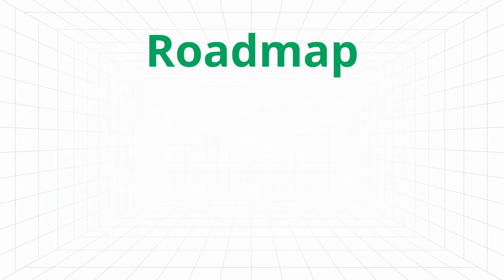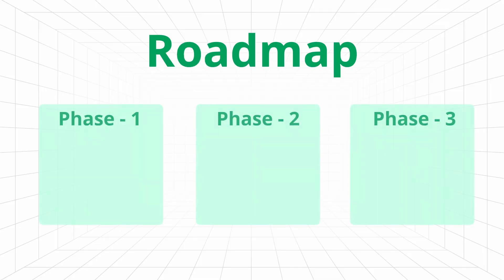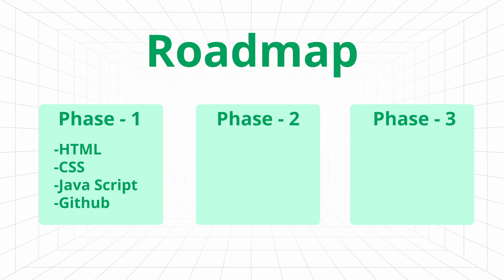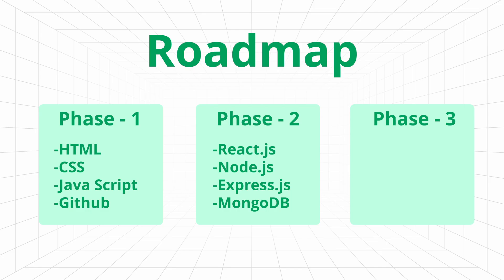For the roadmap overview, I have divided these 90 days into three phases. In phase one, you need to learn HTML, CSS, and JavaScript along with GitHub. In phase two, you have to learn React.js, Node, Express, and MongoDB. And phase three is completely focused on projects, deployment, and advanced concepts.